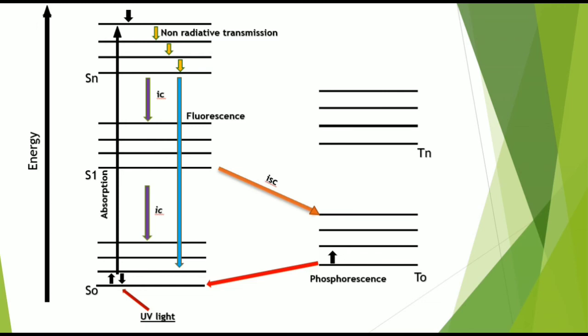When there is a transition from the triplet state to the singlet ground state, it creates phosphorescence. It is also a radiative relaxation. So this was all about the Jablonski diagram.